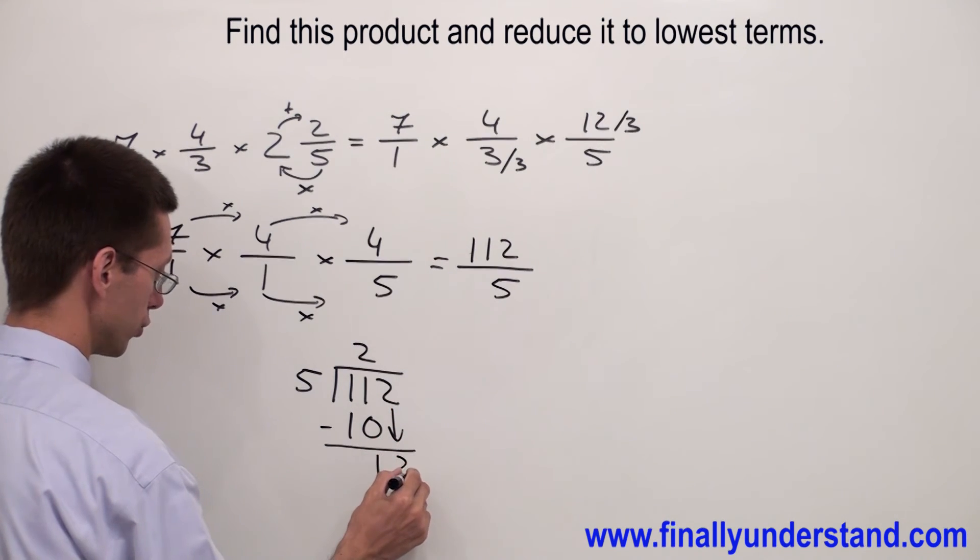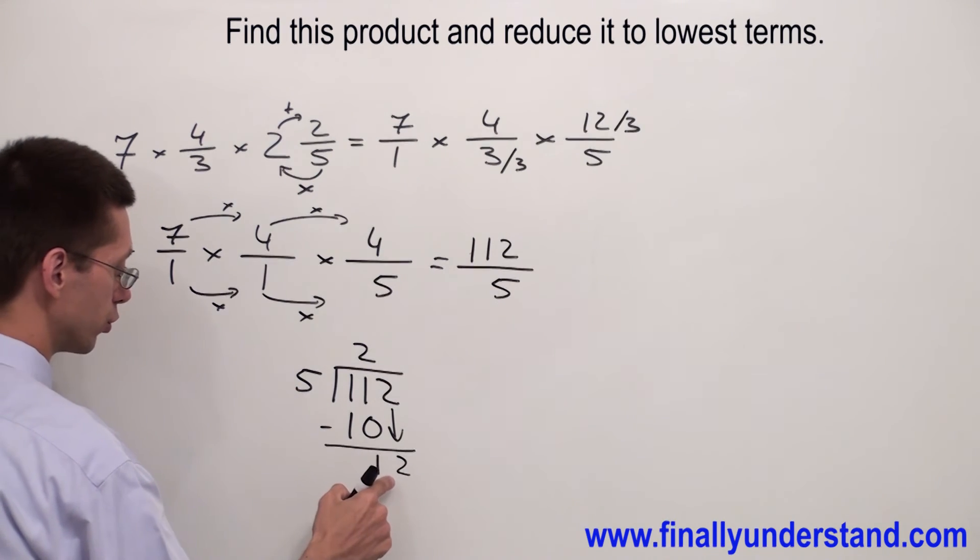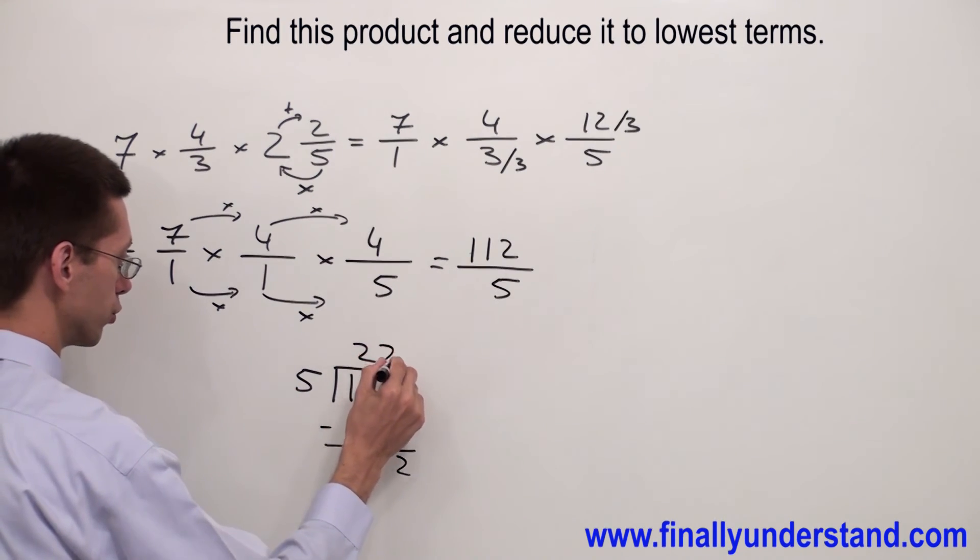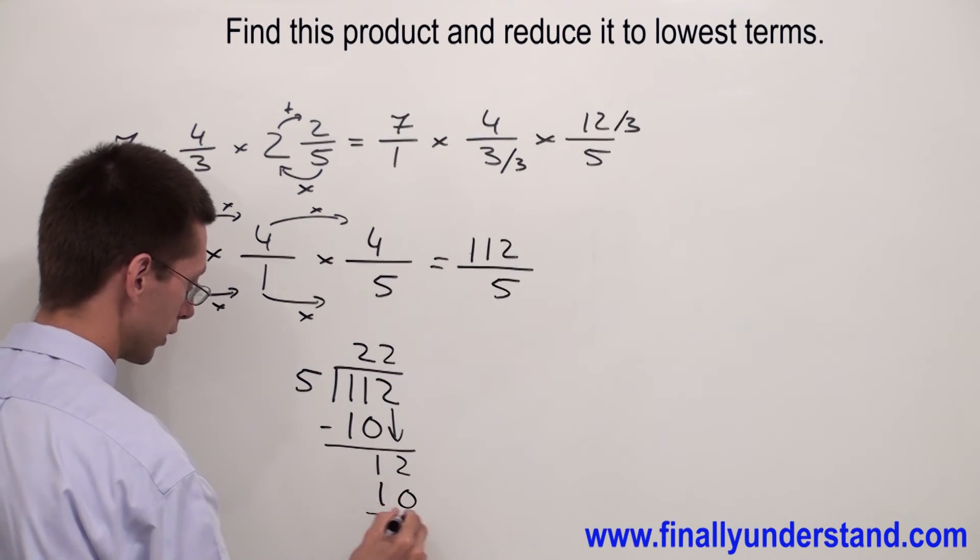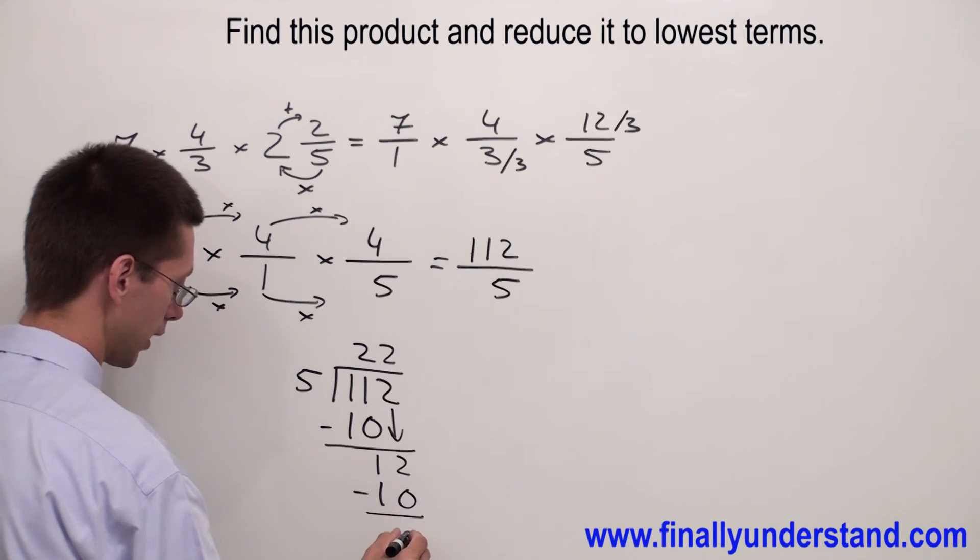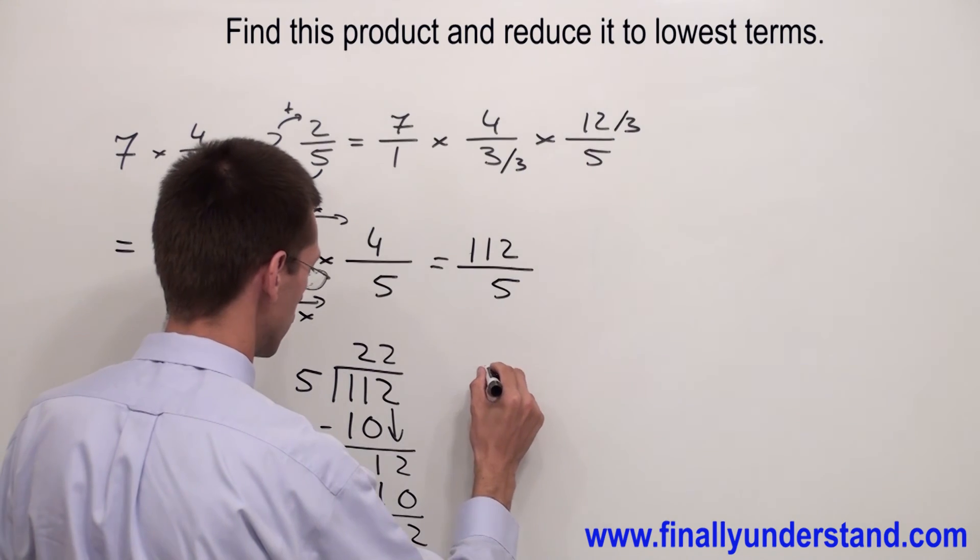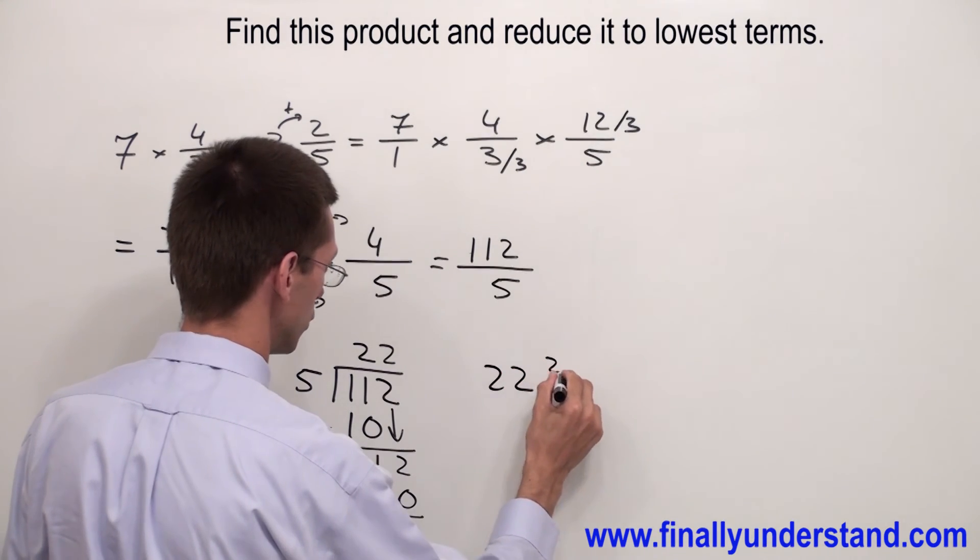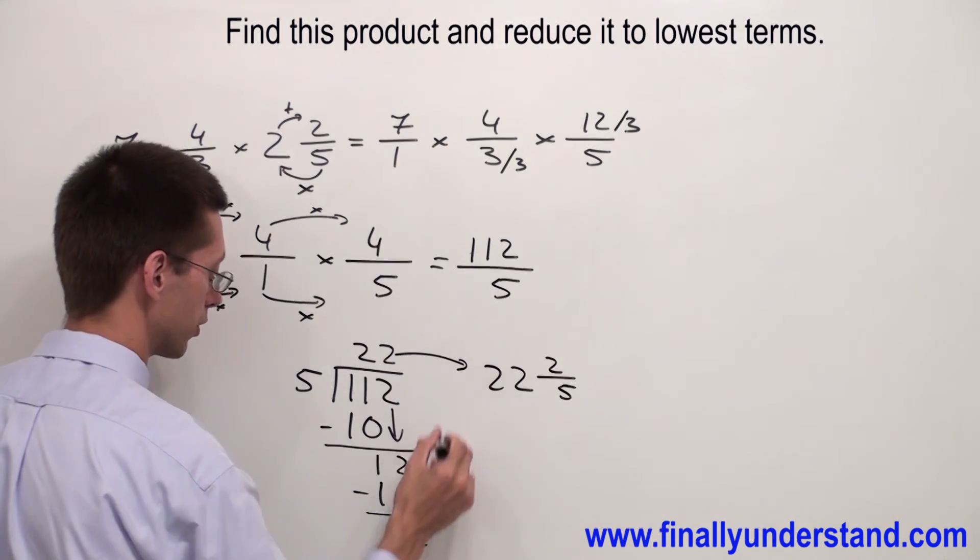Subtract to get remainder 1. Bring down the 2 to get 12. 5 goes into 12, it goes 2 times. 2 times 5 gives me 10. Subtract to get remainder 2.